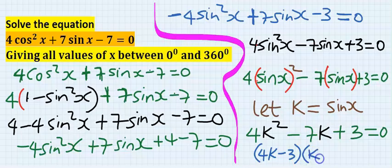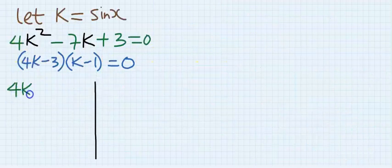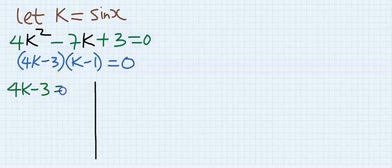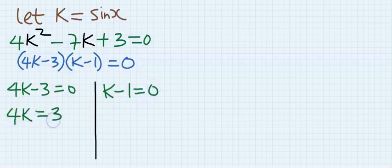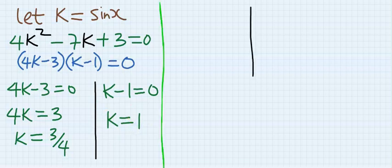This is equal to zero. Solving for k: four k minus three equals zero, k minus one equals zero. Four k equals three, k equals three over four. And here k equals one.